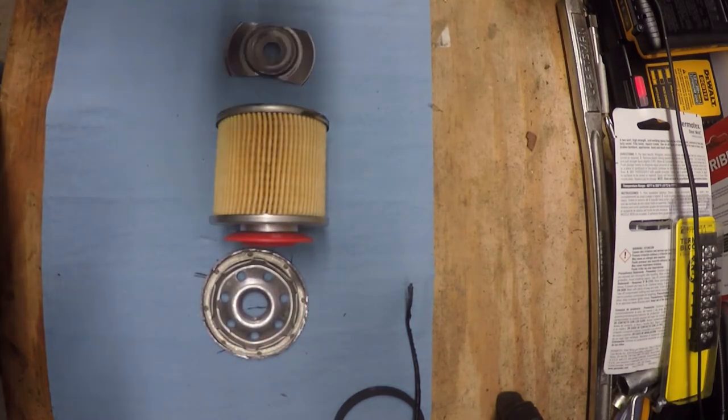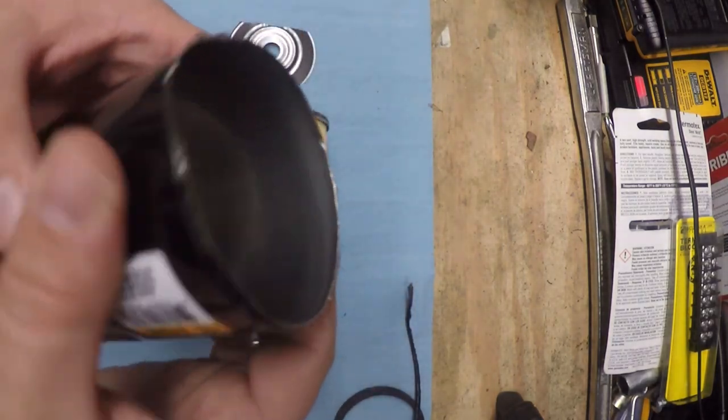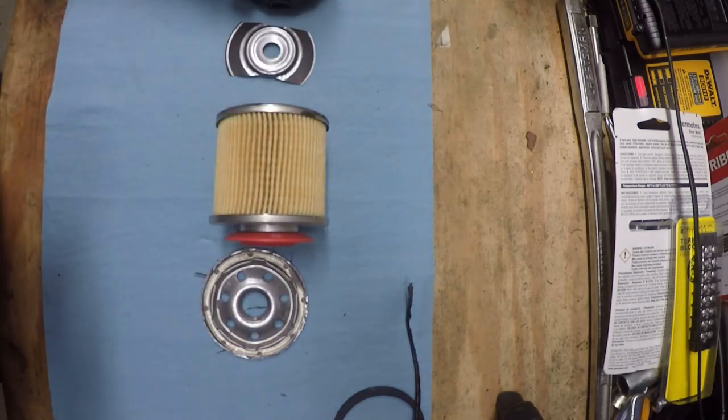And of course the last component that I didn't mention was the canister itself. You'd be surprised how thin that metal actually is. It's really not much thicker than a soda can.